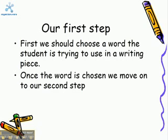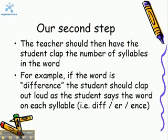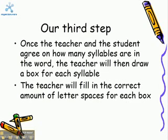Once this word is chosen, we move on to our second step. The teacher should then have the student clap the number of syllables in the word that is chosen. For example, if the word is 'difference,' the student should clap out loud as they say the word on each syllable. Once the teacher and the student agree on how many syllables are in the word, the teacher will then draw a box for each syllable.